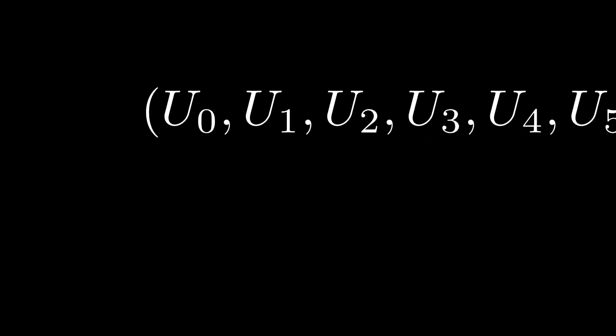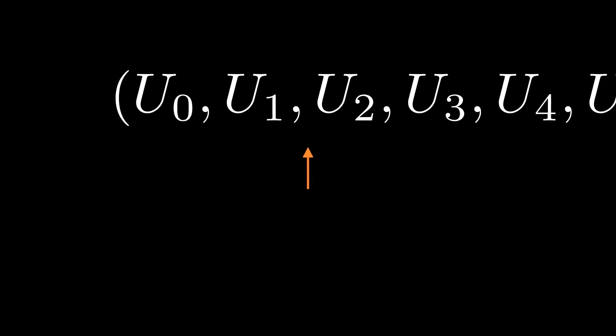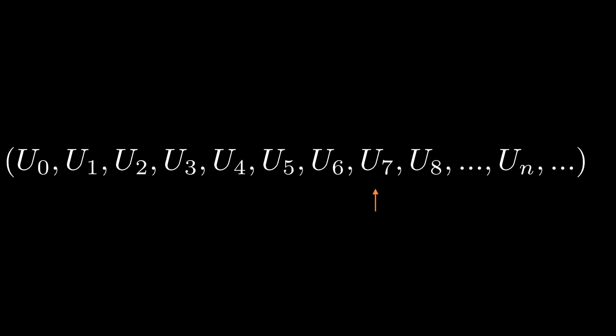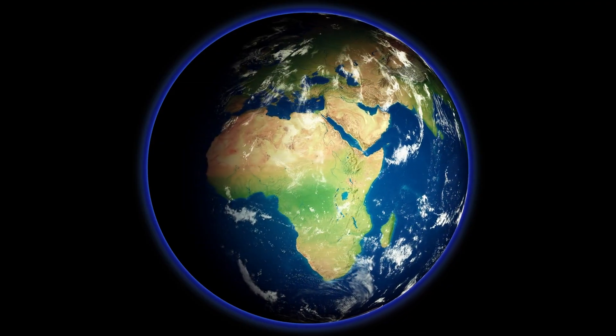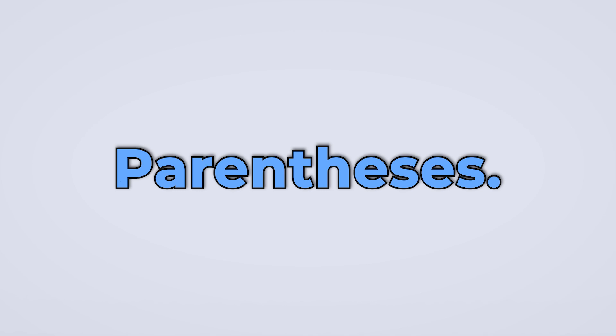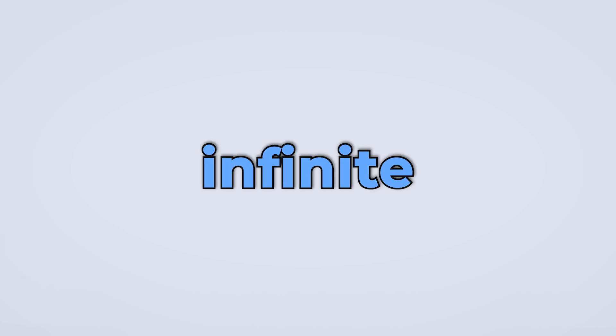For example, this term has position one, this term has position two, and this term has position seven. In order to make mathematics international, we always seek to make conventions on notation. When it comes to sequences in mathematics, we put the members of the sequence — also known as the terms — between parentheses. We also have an alternative name for the sequence: the word 'tuple'.